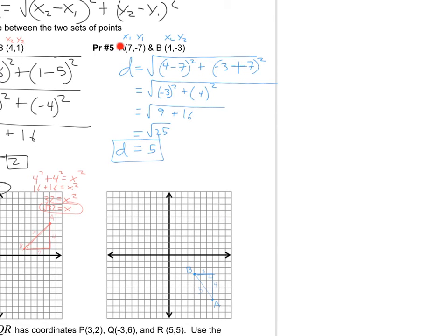Okay. I labeled my points. X1, Y1. X2, Y2. Plugged in the distance formula. Remember that this is going to be the Y2 minus the Y1. Well, that's a double negative there because you're going to get a minus and negative 7. So, I turned it into a plus 7. It's a common mistake.